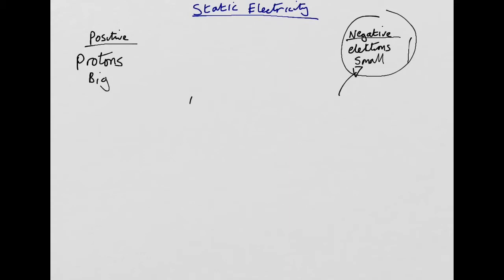Insulators do not allow electrons to move through them, so you can build up static electricity on insulators.